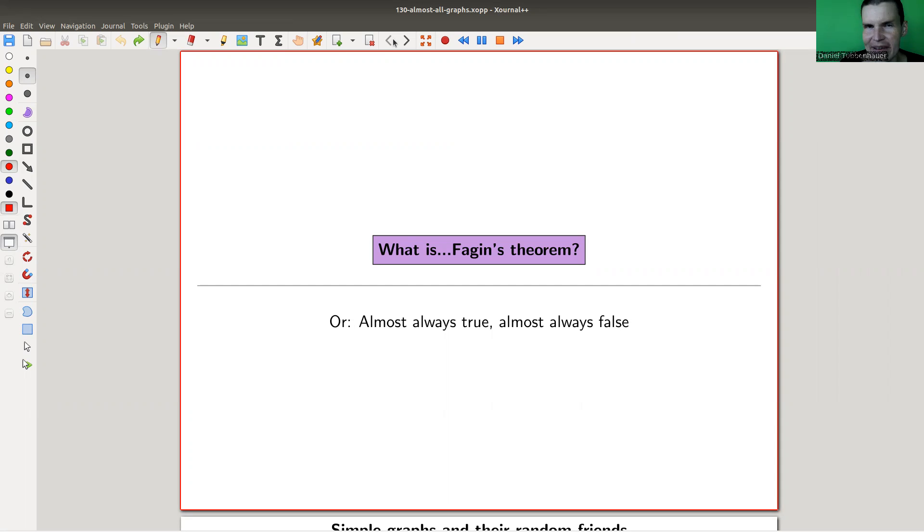Essentially, it is a statement about statements about graphs - a meta-theorem if you want. It's really beautiful, roughly 40 years old. The idea is that essentially everything you can state will be almost always true or almost always false. Very rarely do you have something in between that's true in 50% of cases. Essentially all statements are almost always true or almost always false.